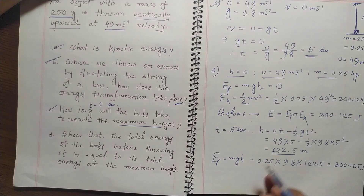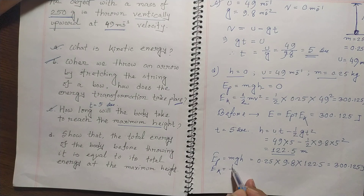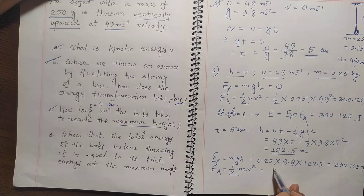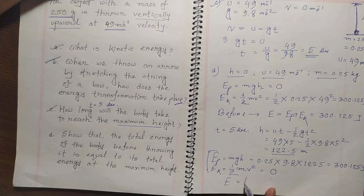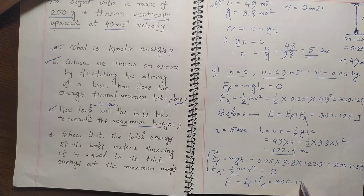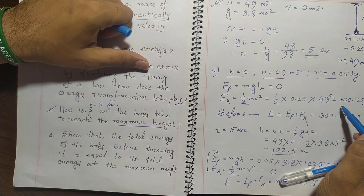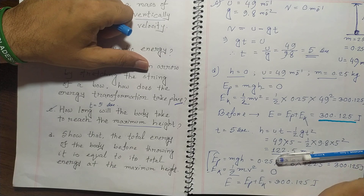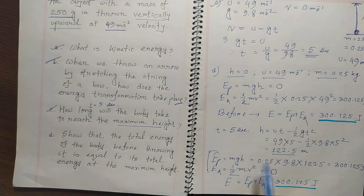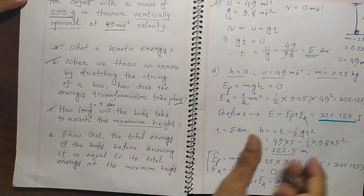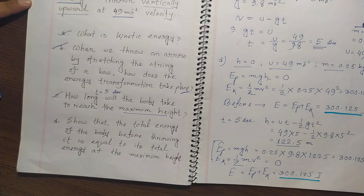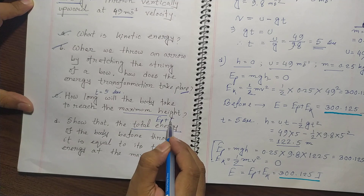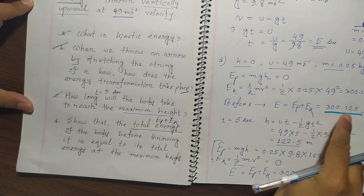At maximum height the velocity is 0, so EK equals half mv squared equals 0. Therefore the total energy at maximum height is EP plus EK equals 300.125 plus 0 equals 300.125 joules — the same as before throwing. This confirms that total energy is conserved, equal to 300.125 joules in both cases.